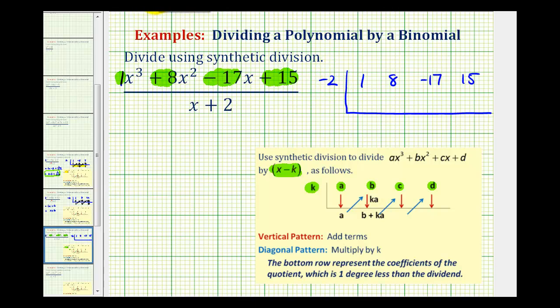To perform synthetic division, we start by bringing the first term down, which is 1. Then every time we bring a term down, we multiply it by negative 2 and put it in the next column. So 1 times negative 2 is negative 2. Then we add vertically: 8 plus negative 2 is positive 6.